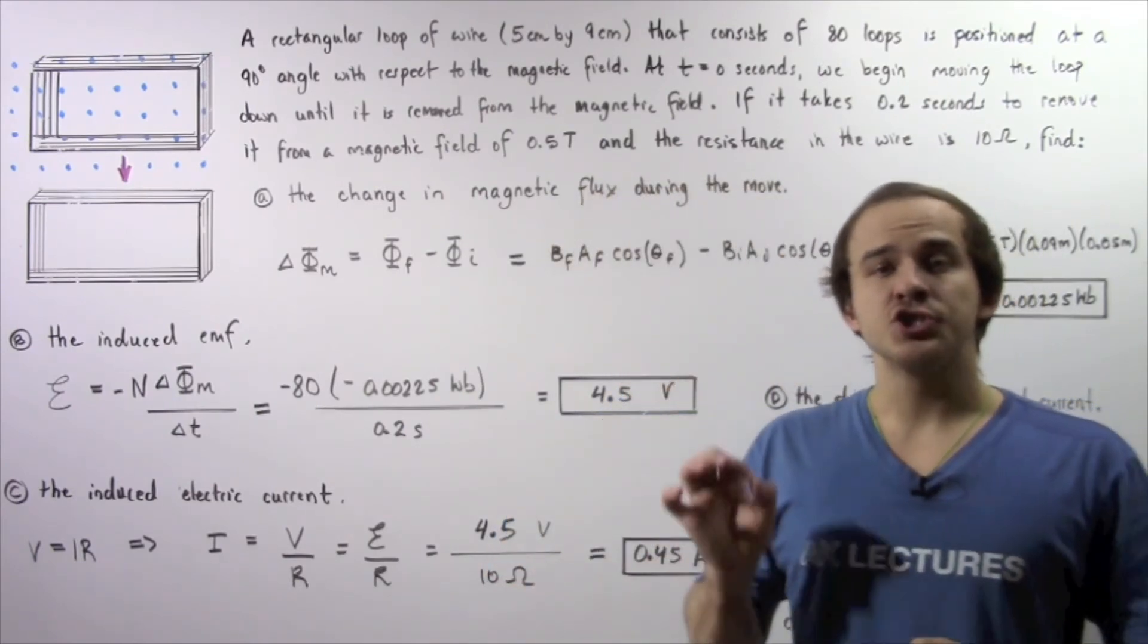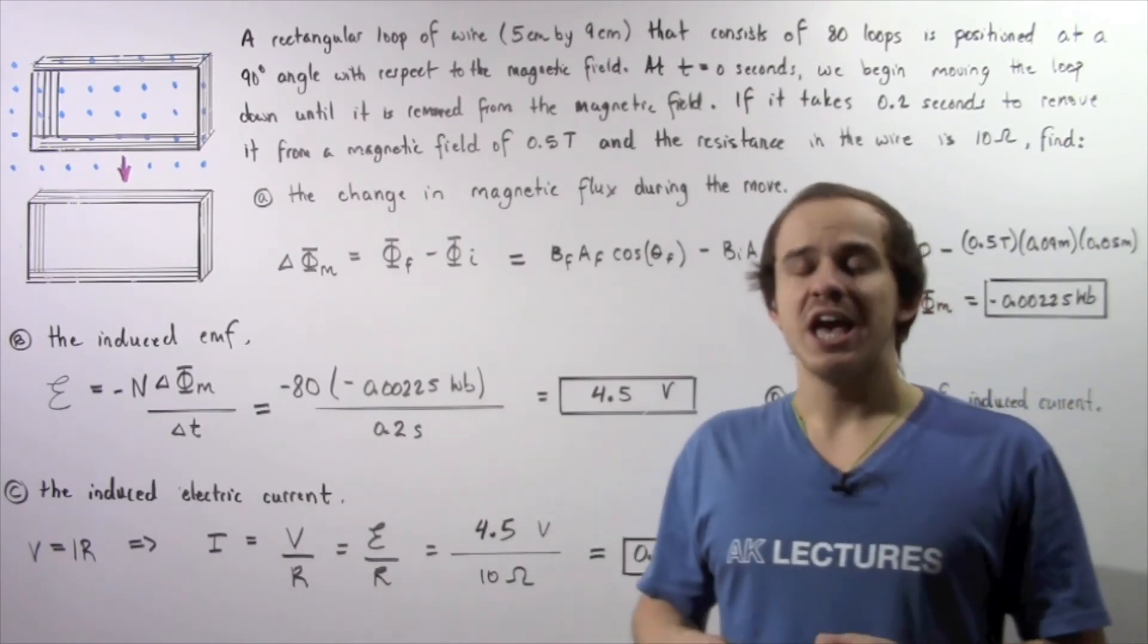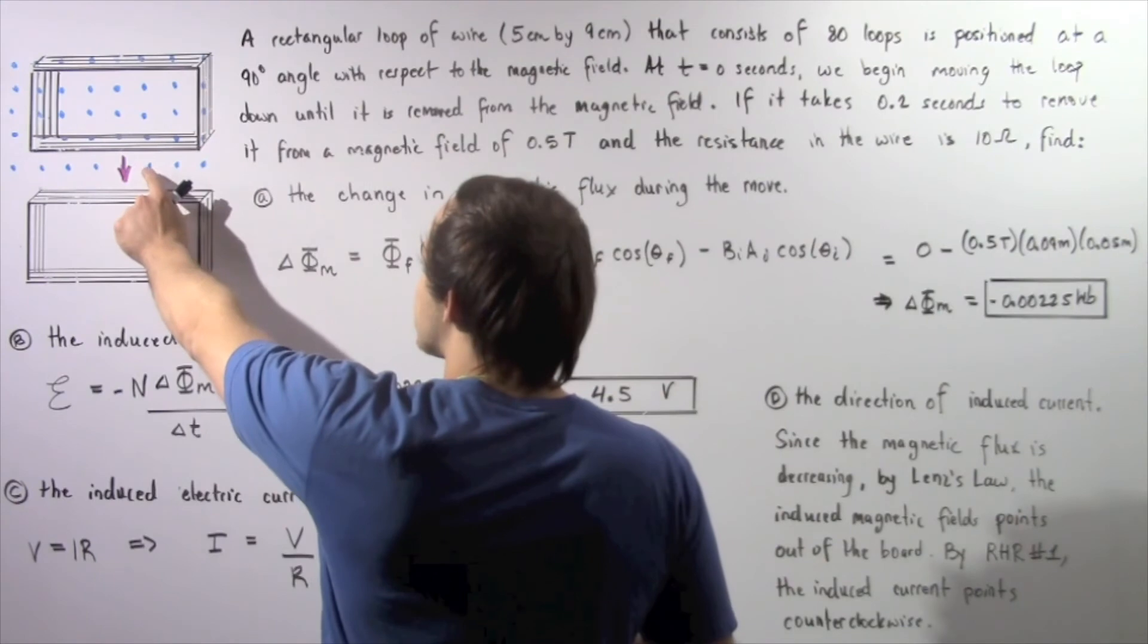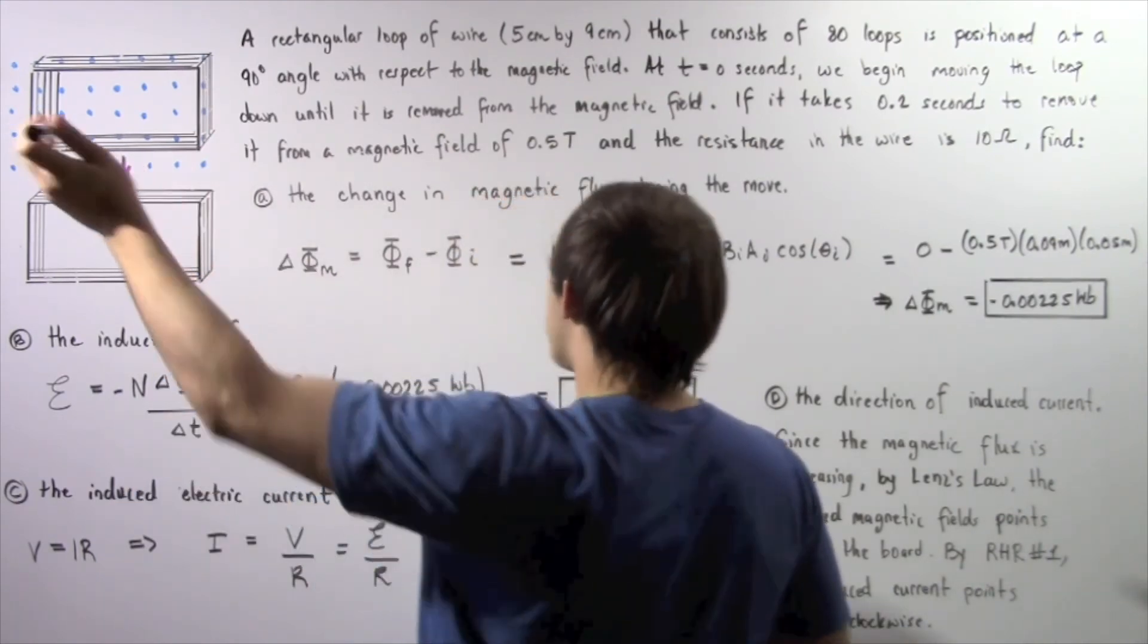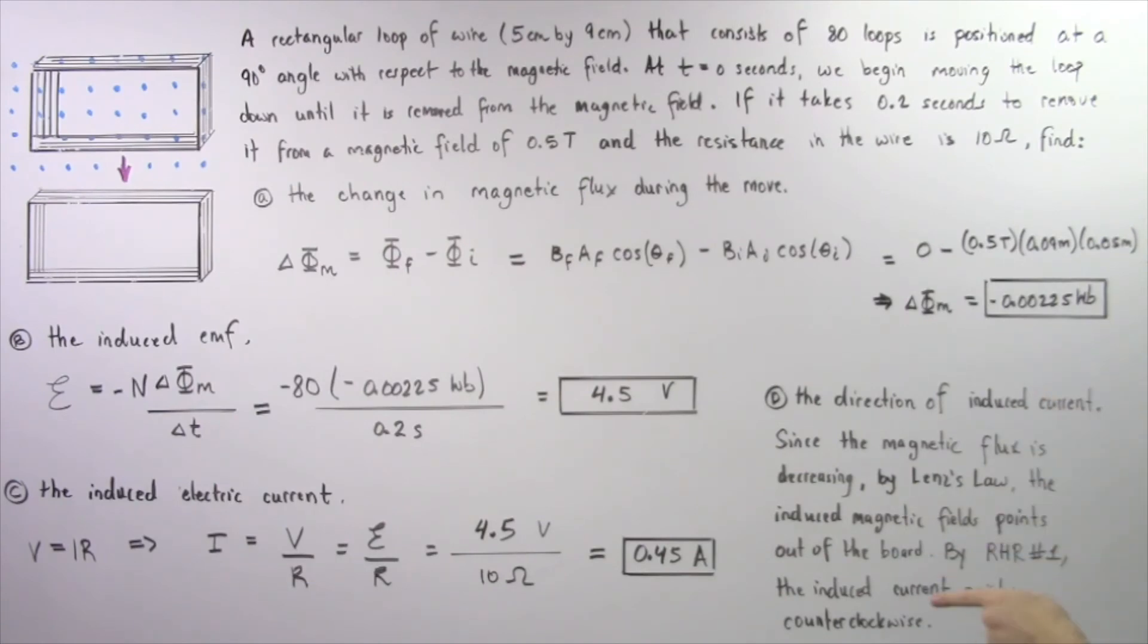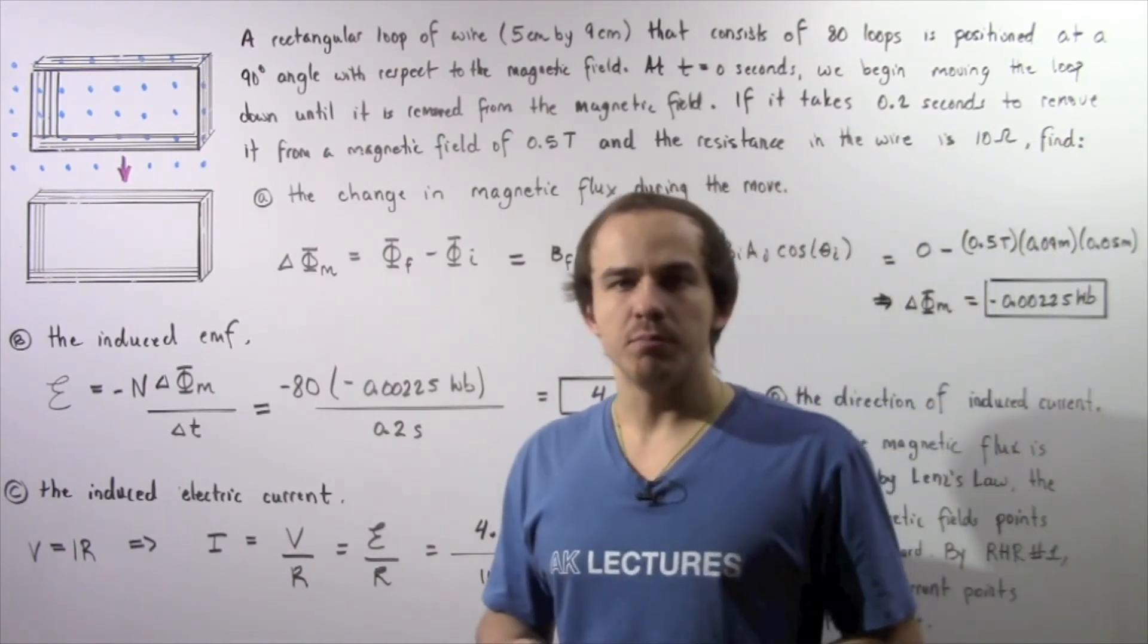And by Lenz's law, that implies the direction of our induced magnetic field created by the induced electric current will point in the same direction as our external magnetic field. So out of the board. So once again, since the magnetic flux is decreasing by Lenz's law, the induced magnetic field points out of the board.